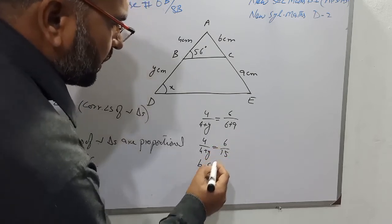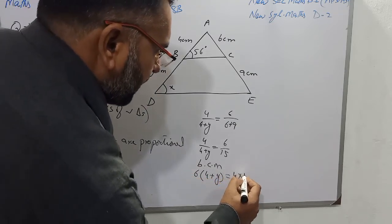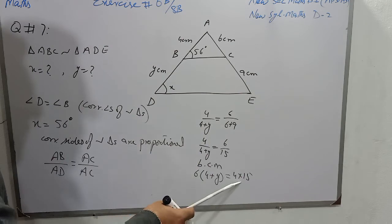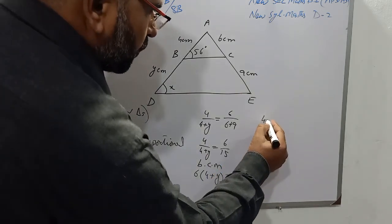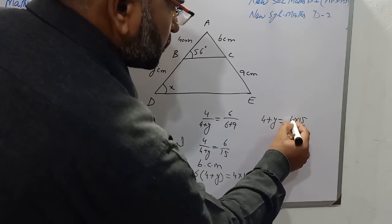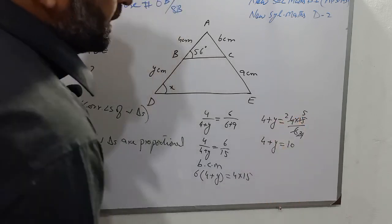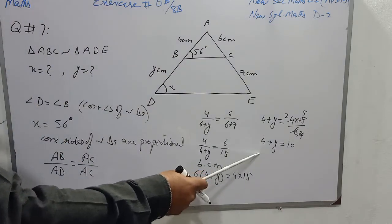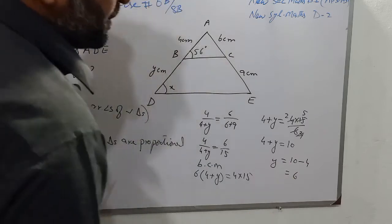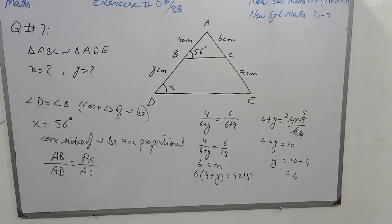We will do cross multiplication (BCM), so it becomes 6 into (4 plus Y) is equal to 4 multiplied by 15. This 6 is multiplying on the left side; when we transfer it to the other side, it divides, giving 4 plus Y equals 4 multiplied by 15 over 6, which simplifies to 10. So 4 plus Y equals 10, and Y equals 10 minus 4, which is 6. The value of Y is 6 and the value of X is 56 — both unknowns are found.